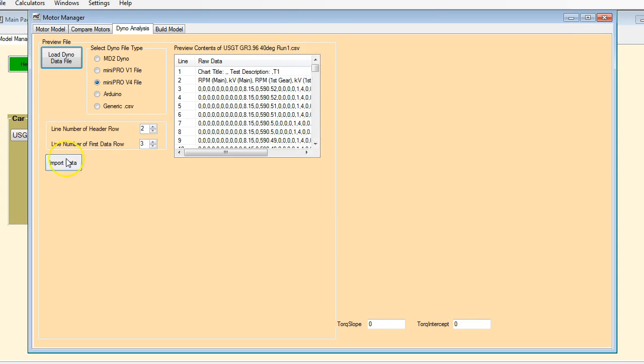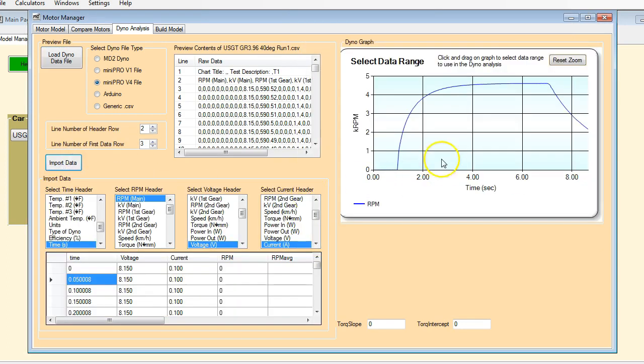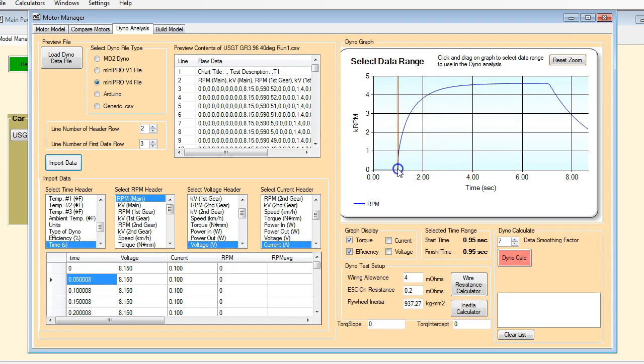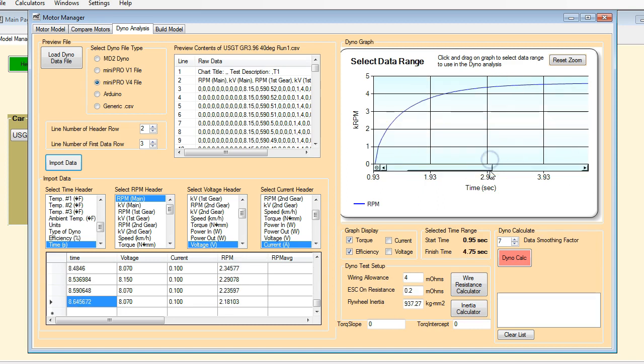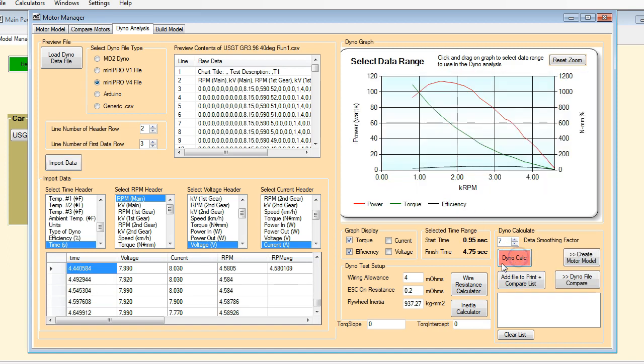So let's just load one of these files in. I'll show you how quickly and easily this can be done. Let's just load this guy and just click import data. So there's your current versus time graph. And to do the dyno analysis, we just need to select the time range. So if we select that and click dyno calc, there you go. You can see the power graph, this is the torque line, and this is the efficiency curve.